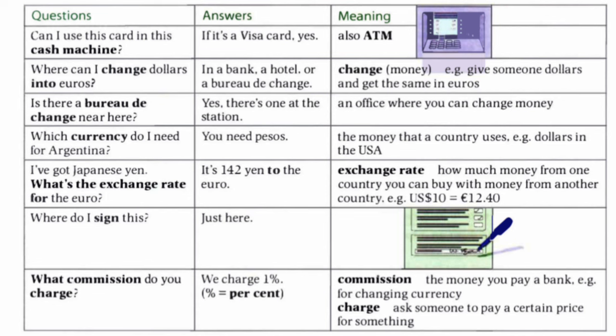For example, dollars in the United States. Next one: I've got Japanese yen — what's the exchange rate for euros? It's 142 yen to the euro. Exchange rate means how much money from one country you can buy with money from another country.